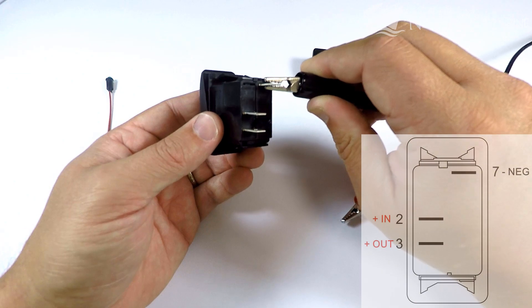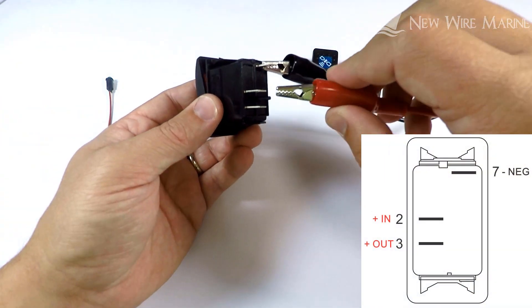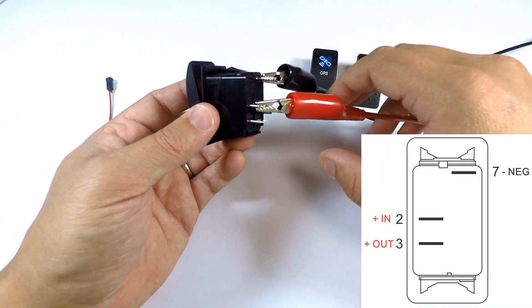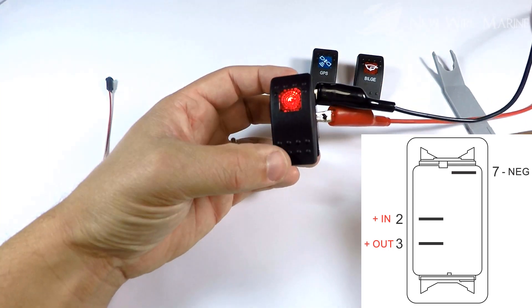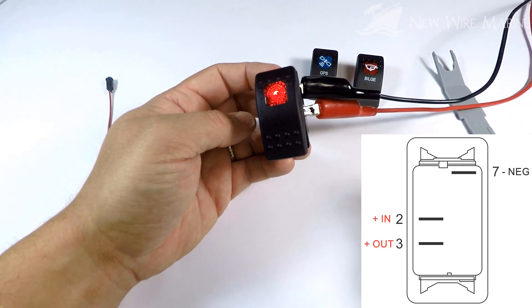I've got a 12 volt power supply. Black is negative. I'm going to hook it up to terminal 7. Red is positive. I'm going to hook it up to terminal 2. And the dependent light in the switch comes on when the switch is on.